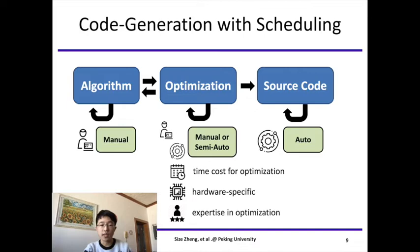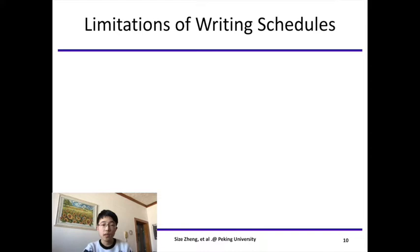By separating compute and scheduling, what we really do is bring automation to source code generation. As shown in this figure, the last stage is handled by machine. This is a great improvement, but developers still have to handle algorithm and optimization. That is, writing compute and schedule. In this work, we point out that separating compute and scheduling is not enough, because finding a good optimization choice can be full of challenge. We require expertise in optimization, and the result is still hardware-specific.